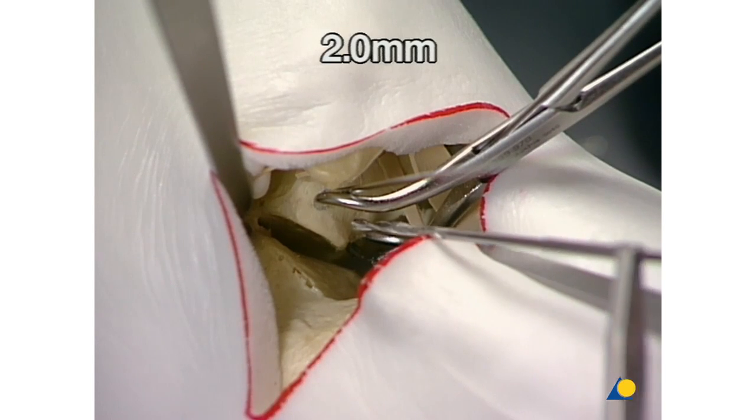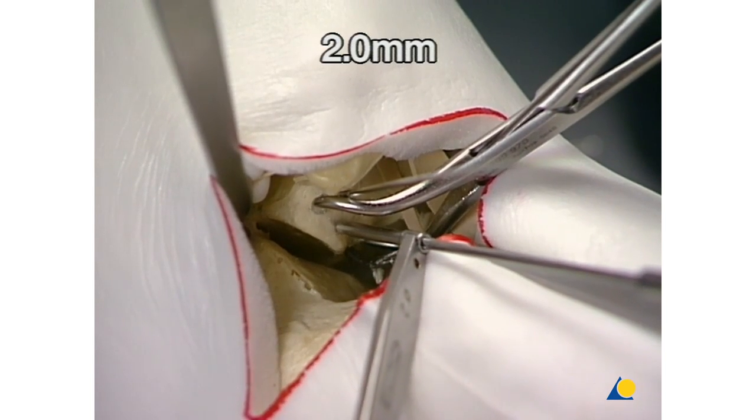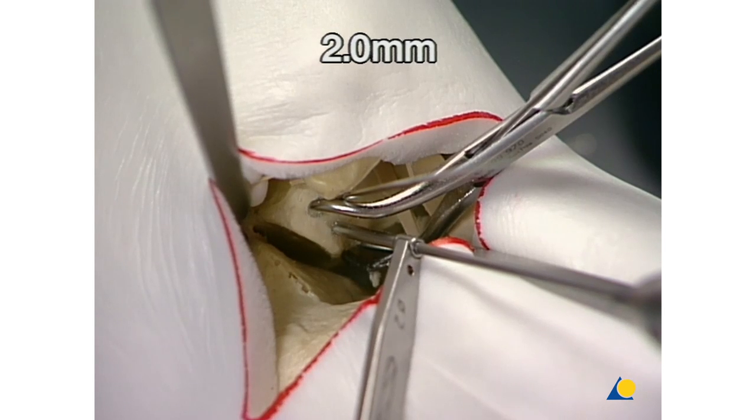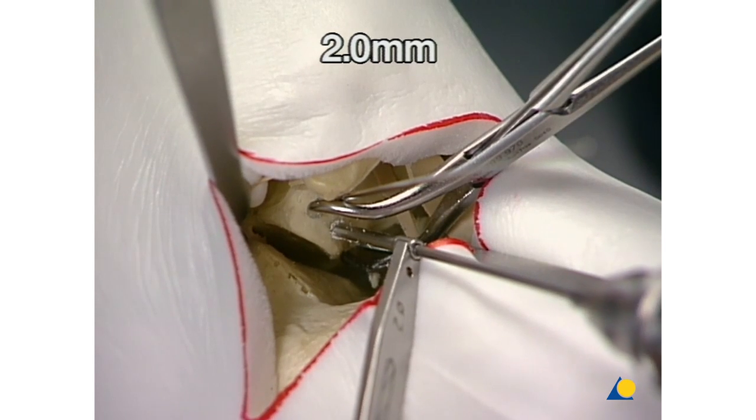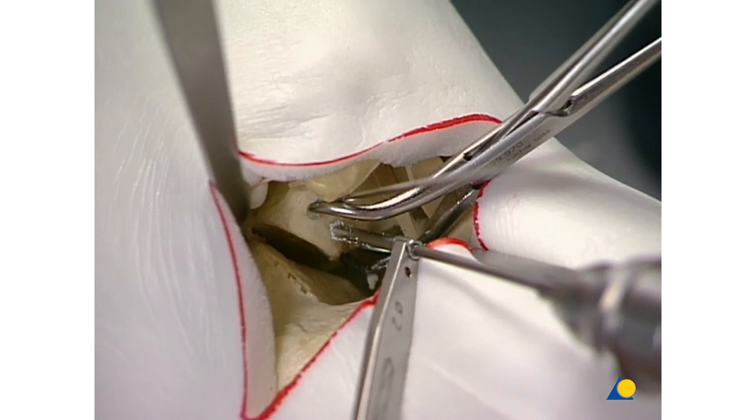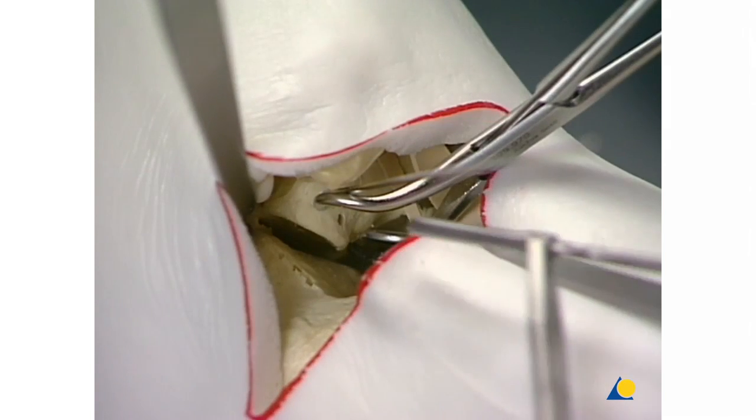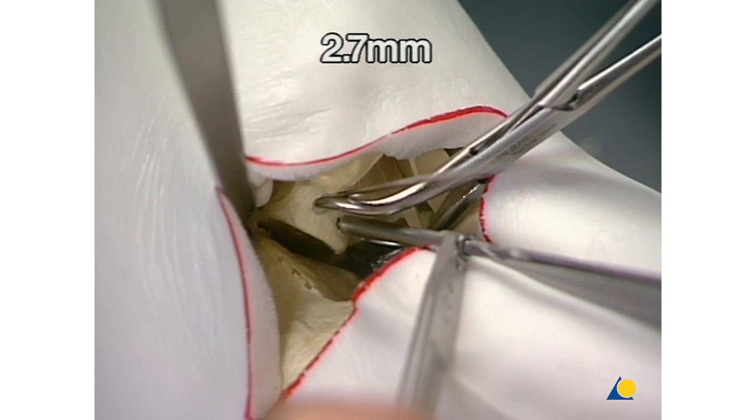We first choose a 2mm drill bit for a 2.7mm lag screw fixation in the sagittal plane. Over-drilling with the 2.7mm drill bit.